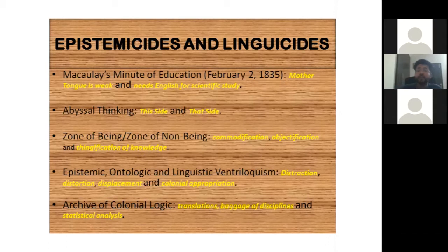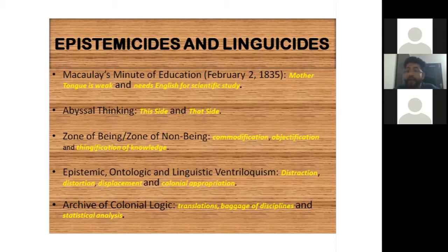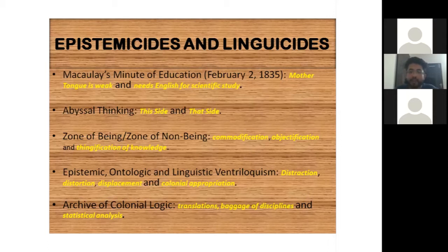Going back to the point of design and rule and define and rule — the colonizers tried to wear the mask of indigenous people to convince them why colonial knowledge is important and how it is superior. That is what decolonial scholar Sabelo Ndlovu-Gatsheni from South Africa calls epistemic, ontological, and linguistic ventriloquism — you hide your real colonial face, wear the mask of indigenous people, and pretend that whatever you're doing, you're doing for them. That is how a major section of Indian people got distracted towards distorted knowledge generated by the West.